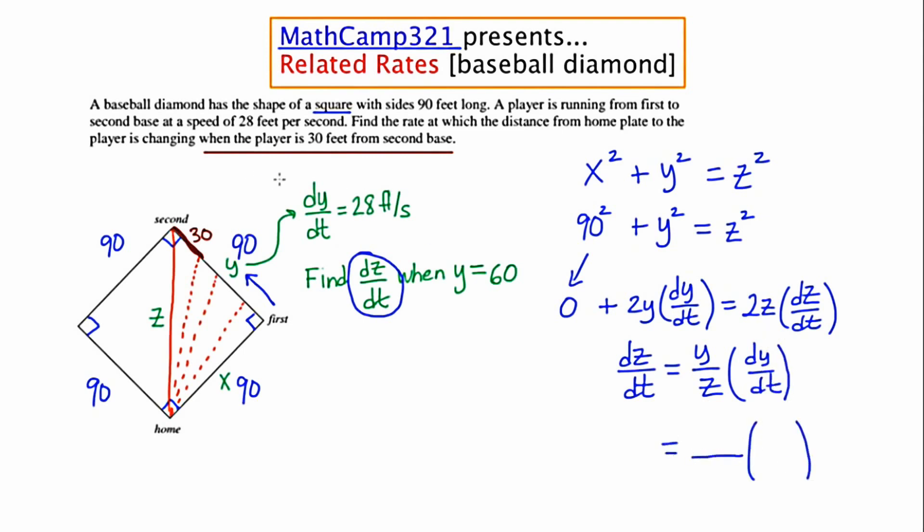Now dy/dt is given to us right here so I can substitute in for that right now. And I'm going to say that this is 28 over 1. y we also know we're answering this question at the moment that y is equal to 60 so I can plug that in. But I need to know what z is. And for me to know what z is I'm going to need to use the Pythagorean theorem. And I'm going to draw a little mini picture up here at the top left where there's a little bit more space.